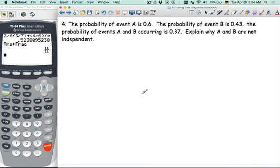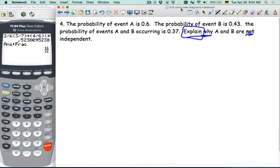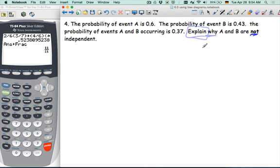Last example. The probability of event A is point six. We don't have any context here. The probability of event B is point four three. And the probability of event A and B, the intersection, is zero point three seven. This is your level five six. You have some understanding because you see this word here, explain. Explain why they are not independent. So we have to reach back to our knowledge from last lesson. And how are we going to do this?